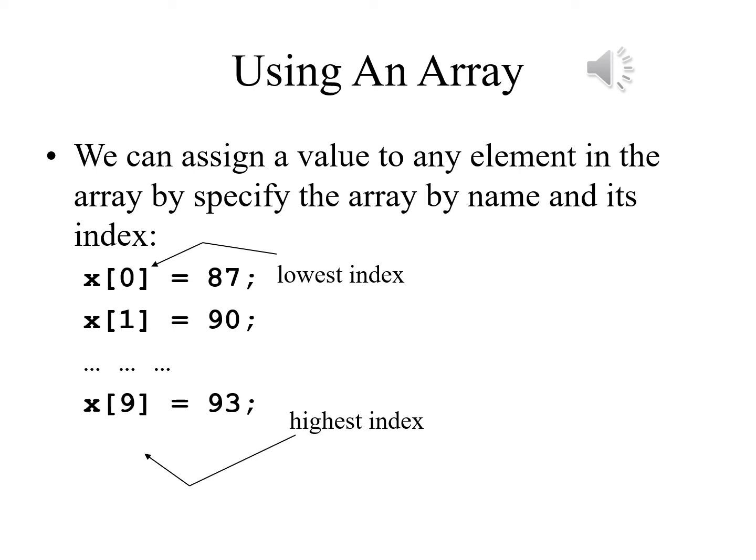A value in brackets indicates which element in the array we are referring to — this is just one example. This number in brackets is called the index. The indices range from zero to n minus one. I root for the Mets, not just for Jacob deGrom — this applies in a large number of cases.